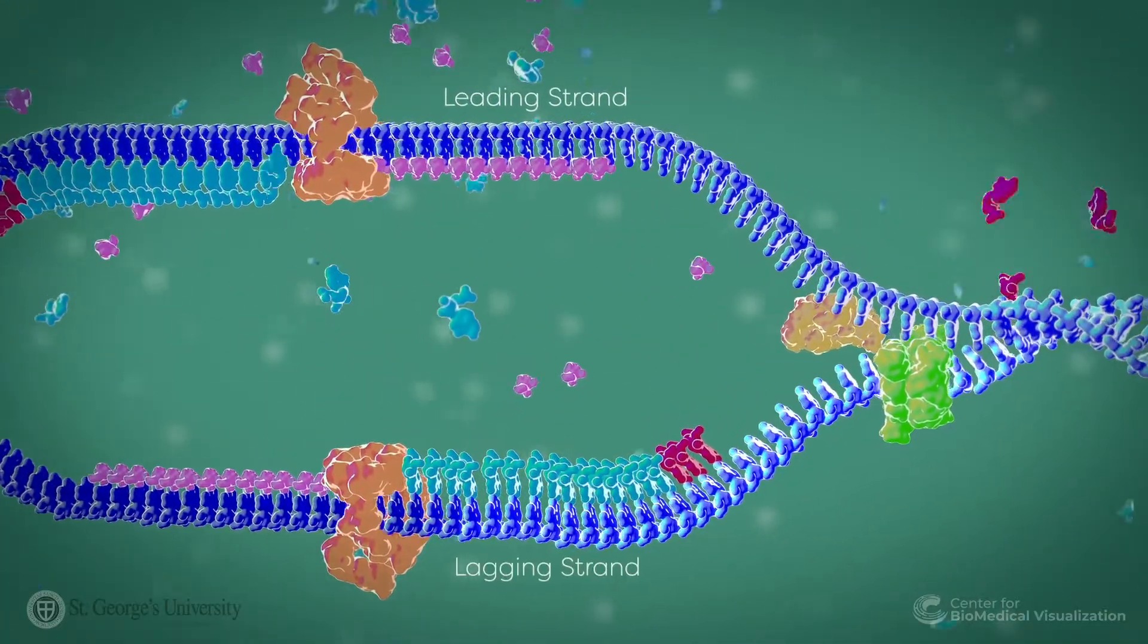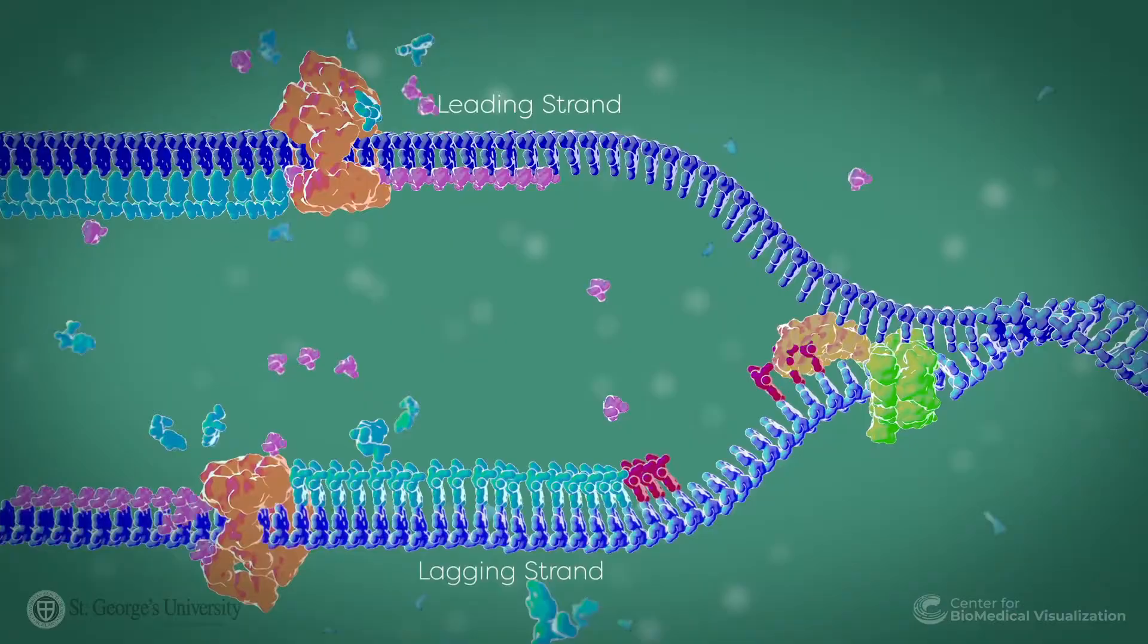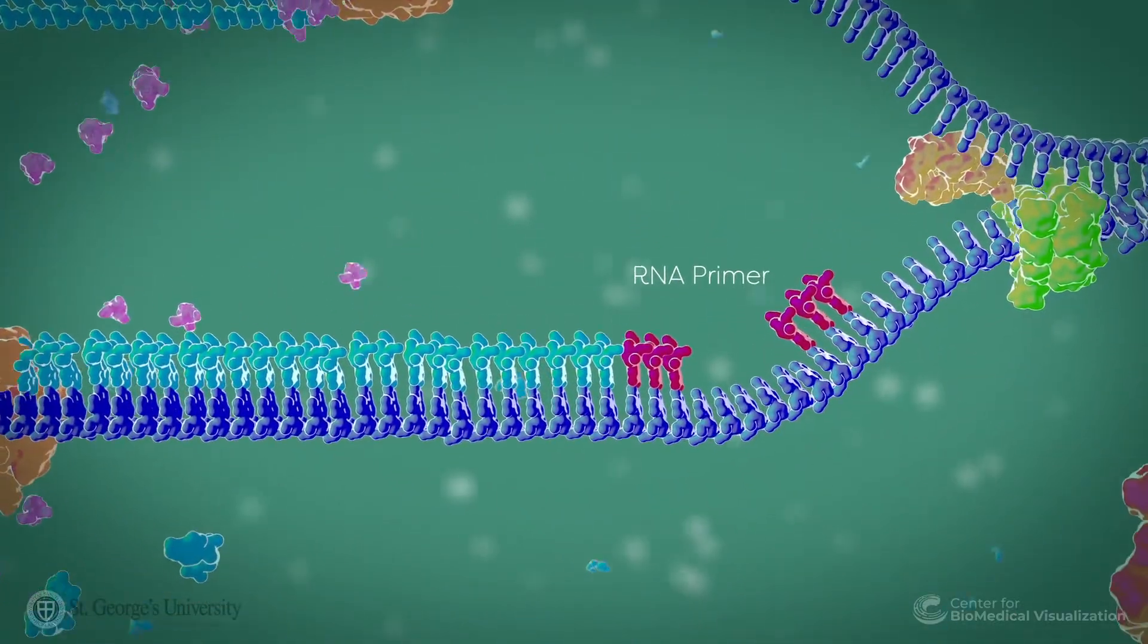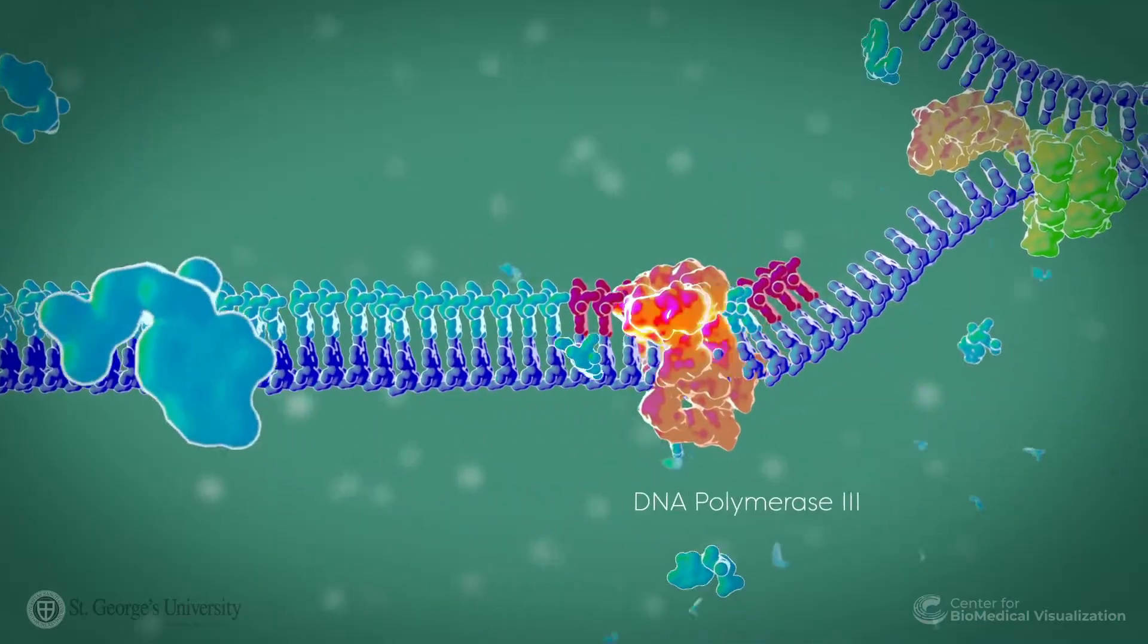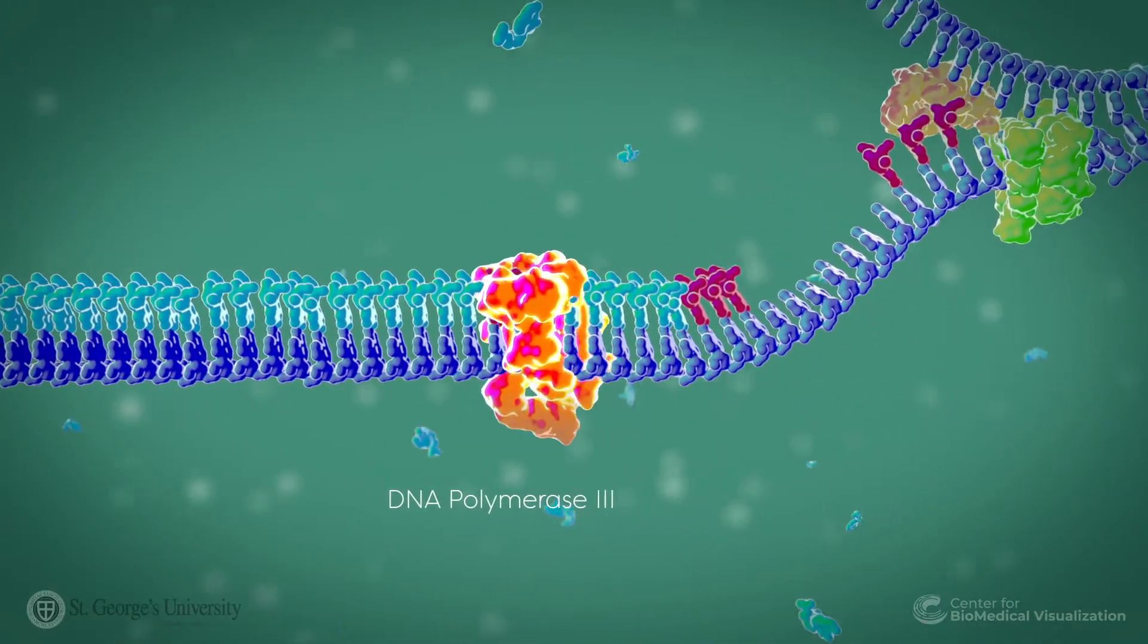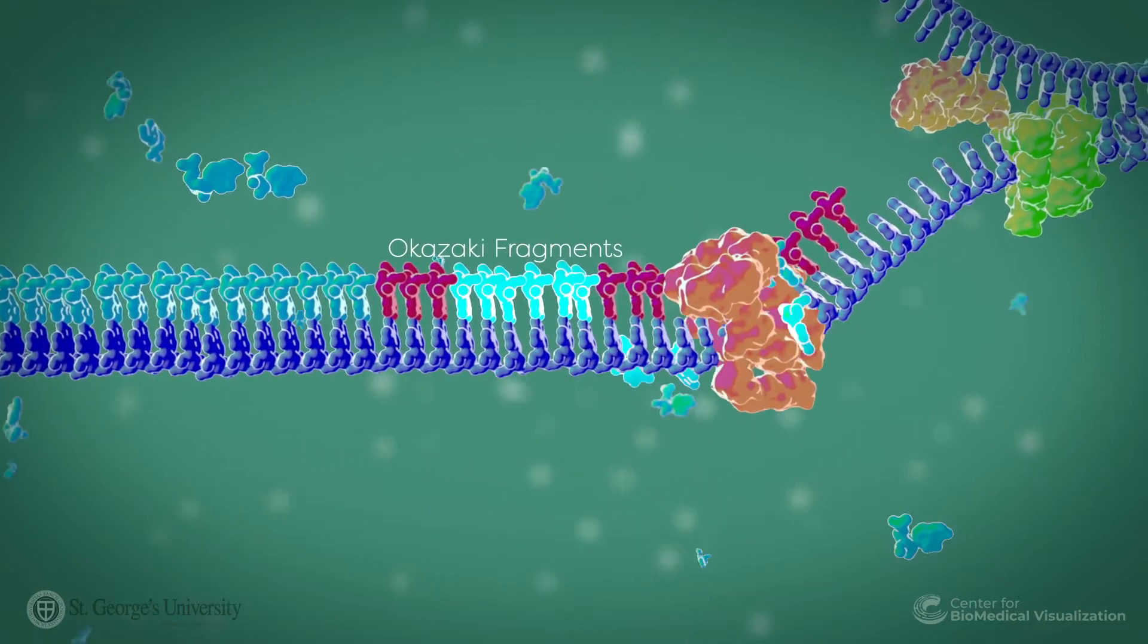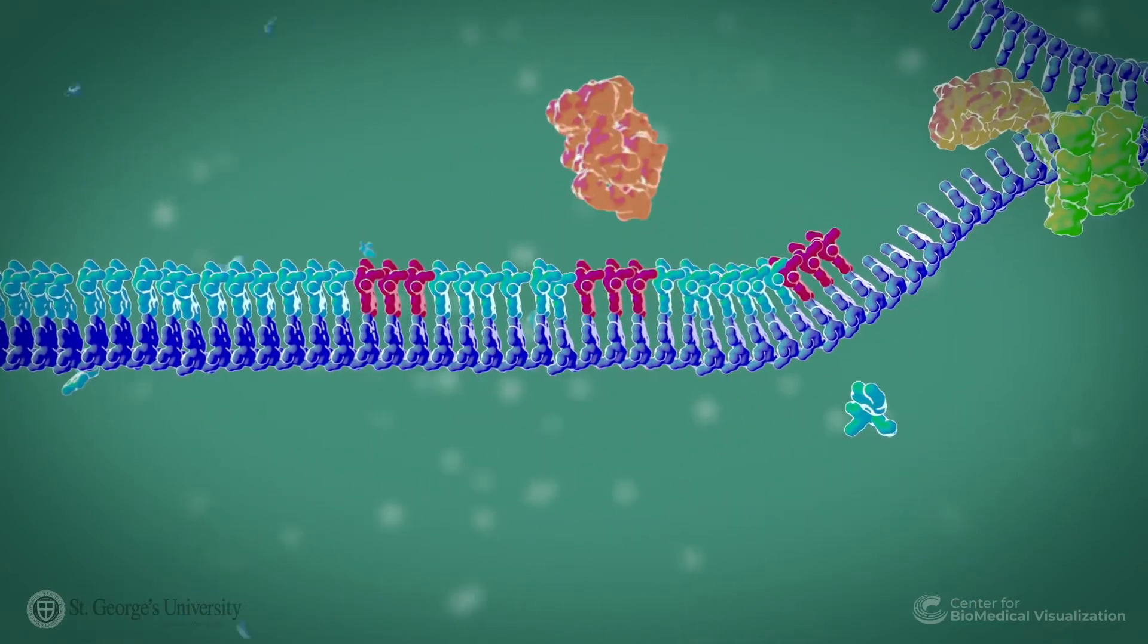On the lagging strand, primase periodically synthesizes an RNA primer, which is then utilized by DNA polymerase 3 for DNA synthesis and the formation of Okazaki fragments.